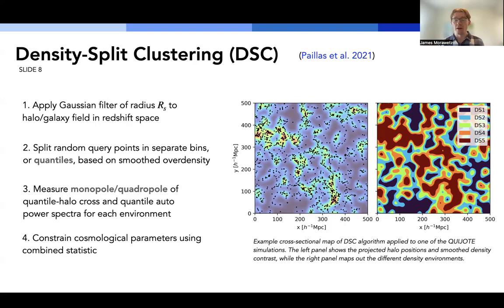So just to illustrate what I mean here, I've shown a plot on the right where I have, on the left panel, the projected halo positions for an XY cross-section of the Quijote simulations. And the background color represents the smooth over density. And the right panel denotes the quantiles, in other words, the regions associated with particular density thresholds. And once we have these quantile positions, we can measure the power spectrum. So for example, the monopole and quadrupole of the quantile halo cross-correlation and the quantile autocorrelation for each environment individually. And then we combine these into a single summary statistic, which we can then use to constrain cosmology.